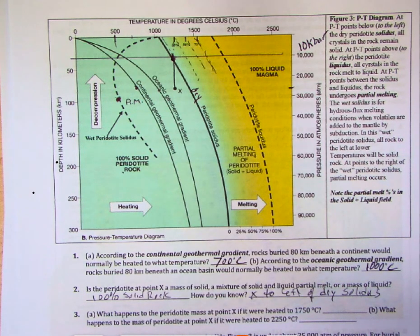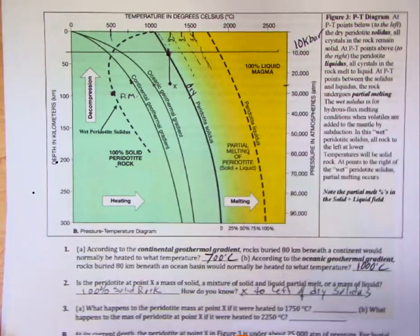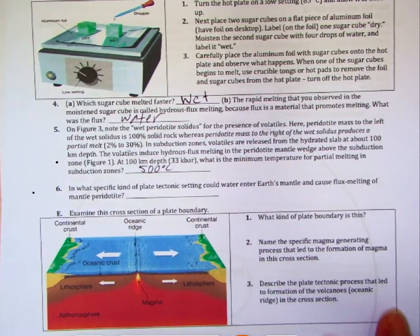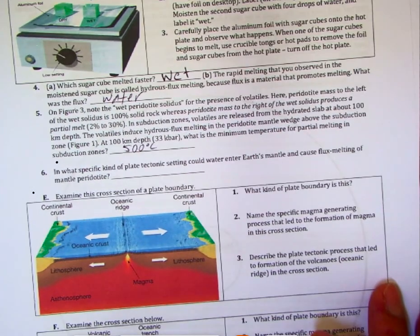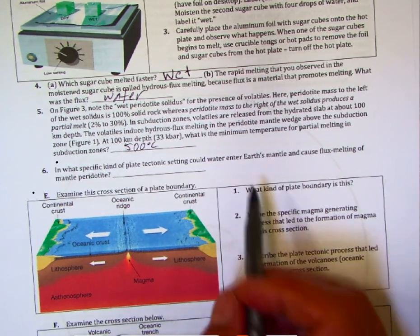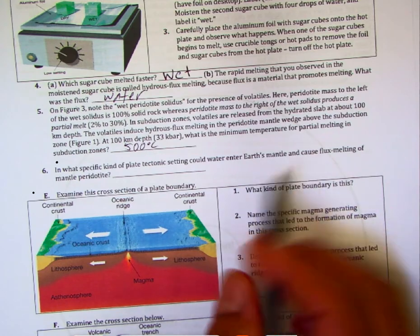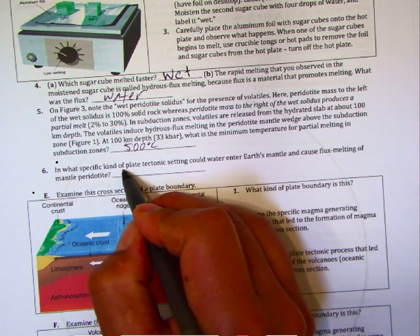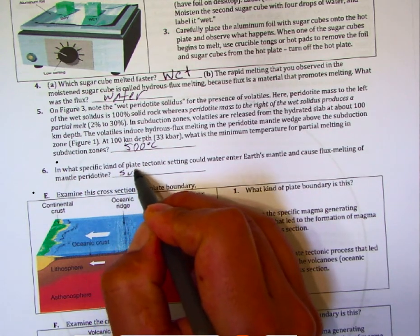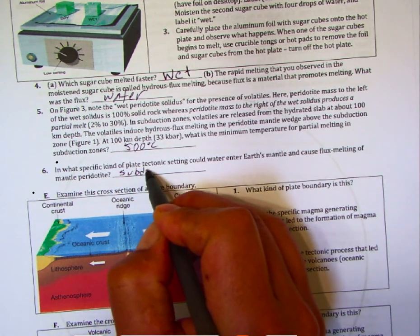This is only happening in subduction zones. So when we consider what type of process allows water to enter, the answer is subduction at convergent margins.